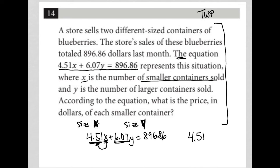and basically what this equation is telling us: if I multiply the price of the small container by the number of small containers, and I multiply the price of each large container by the number of large containers, then I get the total amount of store sales for both containers,